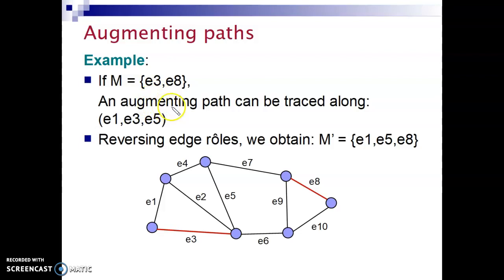We can trace an augmenting path in this graph. Here is one. We start from this edge, from this node, which is a free vertex. Follow the edge E1, and then E3, and then E5. It's a short path, but it is an augmenting path. It starts from a free vertex, ends at a free vertex, and it contains alternating edges.